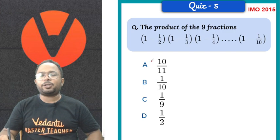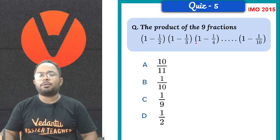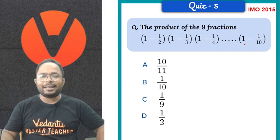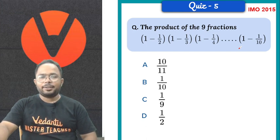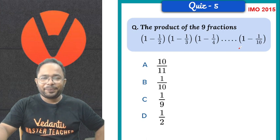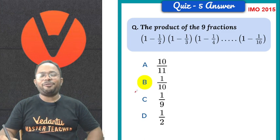Let's move on to the next question. The product of the 9 fractions. 1 minus 1 by 2, 1 minus 1 by 3, 1 minus 1 by 4, and so on, till the 1 minus 1 by 10. Then what would be the answer? Let's look into the answer. If you are getting 1 by 10, it's fantastic.